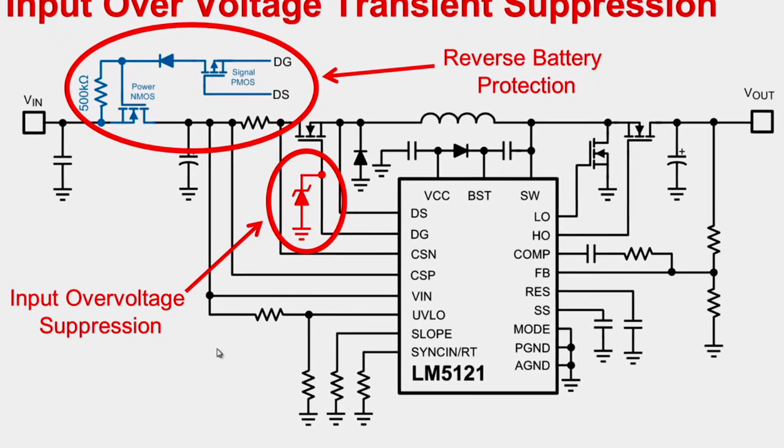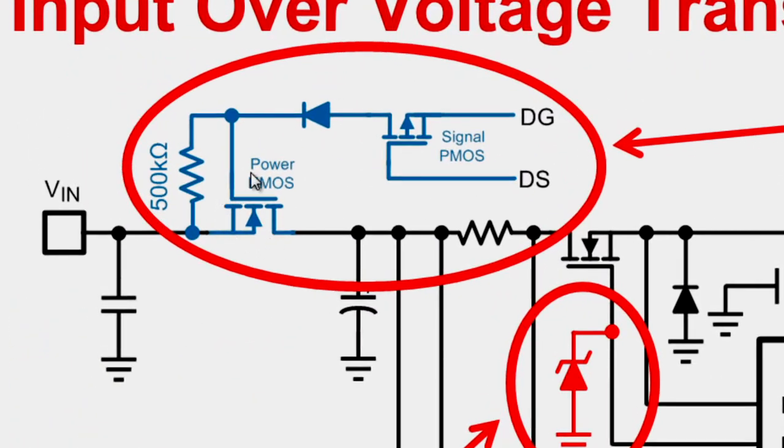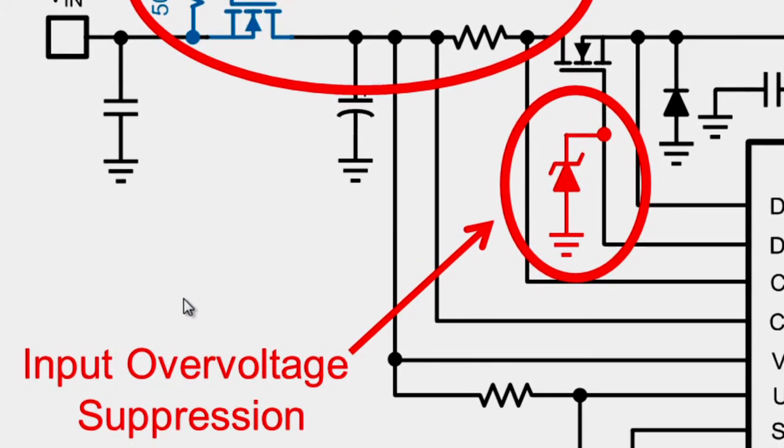The reverse battery protection is achieved by adding one N-channel MOSFET for reverse battery protection. And the input over-voltage suppression can be achieved by adding one general diode at the gate of the disconnection switch.